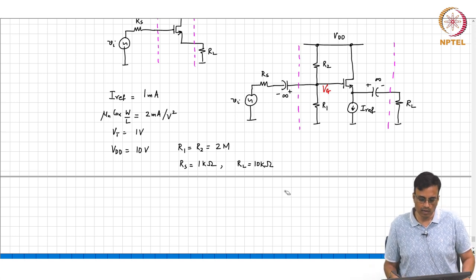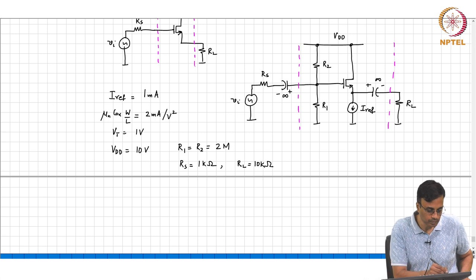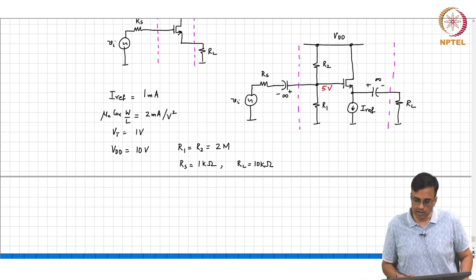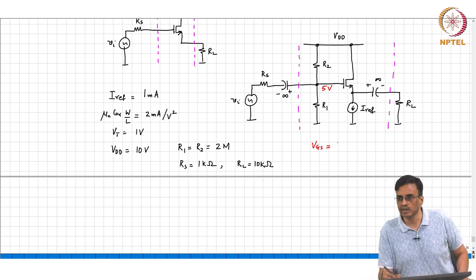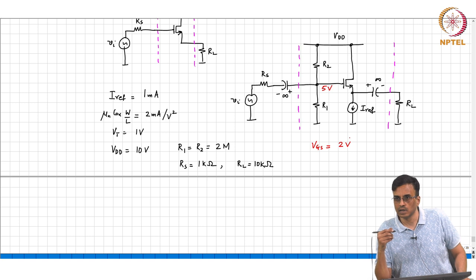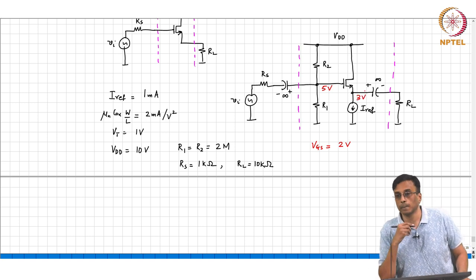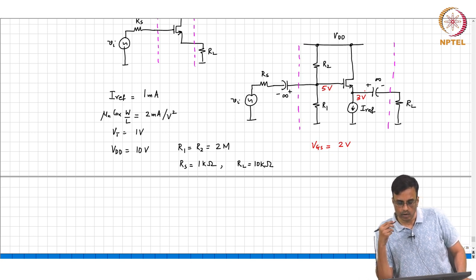Let us calculate the operating point. V_G = 5V. V_GS − V_t = 1V so V_GS = 2V. Therefore the quiescent source potential is 3V. The transistor is in saturation because the drain potential is higher than the gate potential, so there is no risk of triode operation.